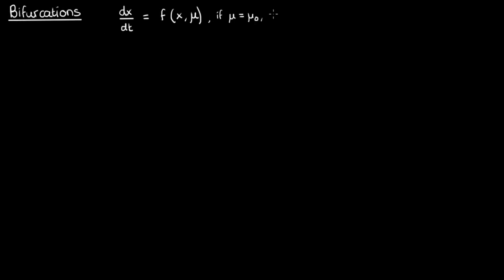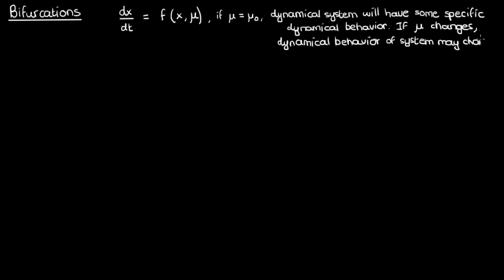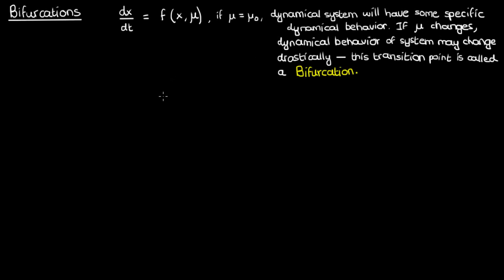Now if μ is a certain fixed value then this dynamical system will have a particular set of stable fixed points, unstable fixed points, and half-stable fixed points — some specific dynamical behavior. However, if I gradually change μ to another value, it's possible that the dynamical behavior of the differential equation undergoes a drastic change. This transition point in the value of μ at which the behavior undergoes a significant change is called a bifurcation.